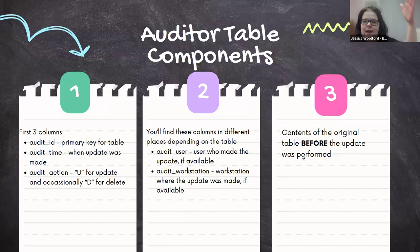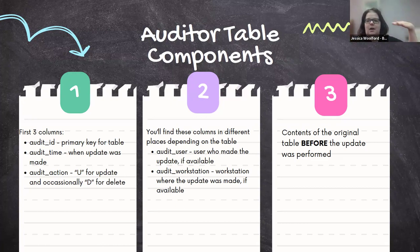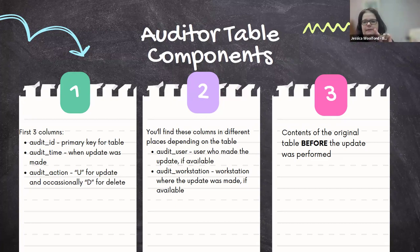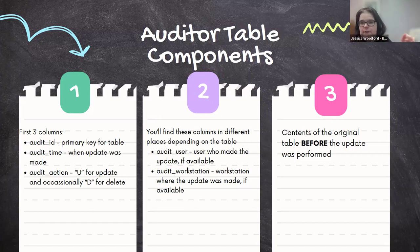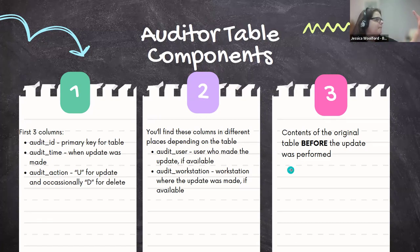The third component is the actual contents of the table. This is important to realize when reading these tables: it's making a copy of the state of that row before the update was made. So for example, if I go in, change a circ modifier on an item, and hit save — if that was the last change — I'm not going to see the new circ modifier in the auditor table; I'm going to see what the circ modifier was before I hit save. It's making a little snapshot of that point in time when the update was made.